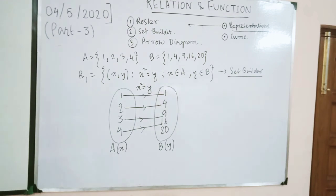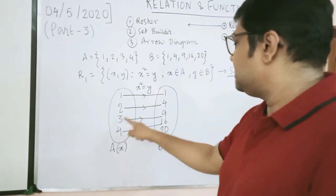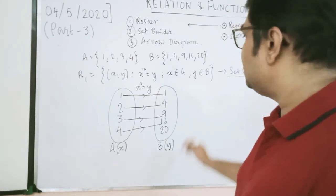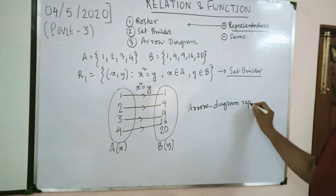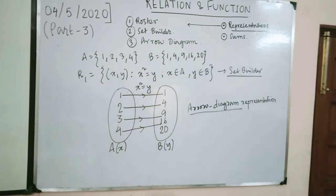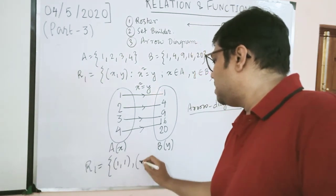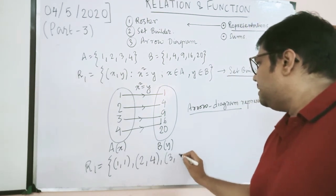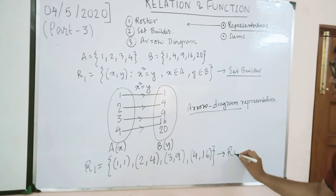For the arrow diagram, the arrow drawing is a must — the connection and direction of the arrow are required. So 4 is connected to 16, 3 is connected to 9, and so on, as per this condition. This is the arrow diagram representation. Now the roster form: R1 = {(1,1), (2,4), (3,9), (4,16)}. This is the roster form.